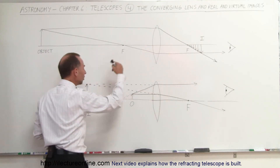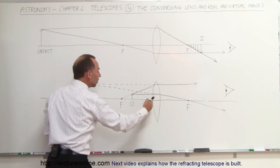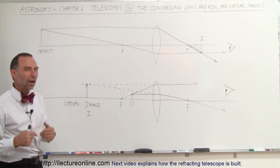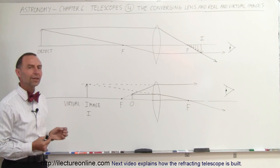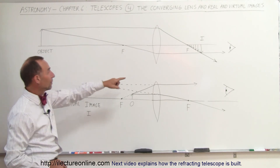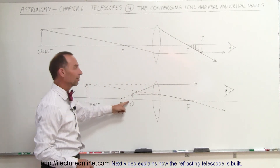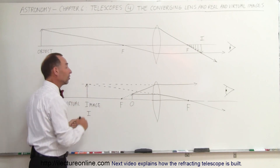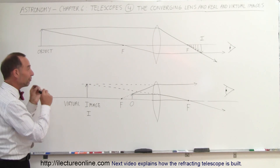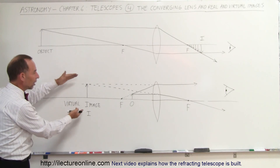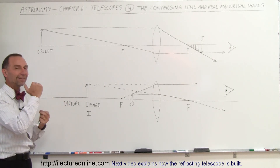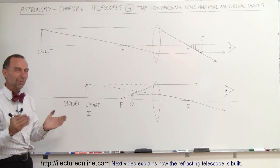If you then take that image and use it as the object of the second lens, you can produce a very magnified image on the other side — and that's how telescopes work. In the next video, I'll put those two together so you can see how a real refracting telescope works: taking the image of the first lens and using it as the object of the second lens to form a final, very large image of objects that appear very small because they're so far away.